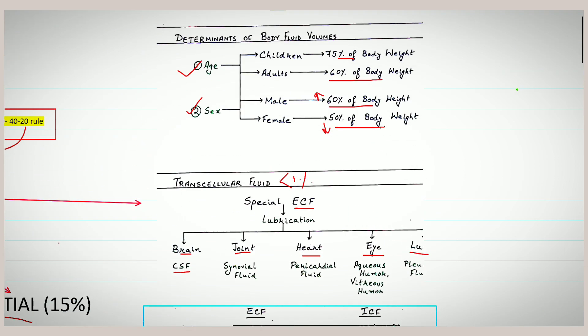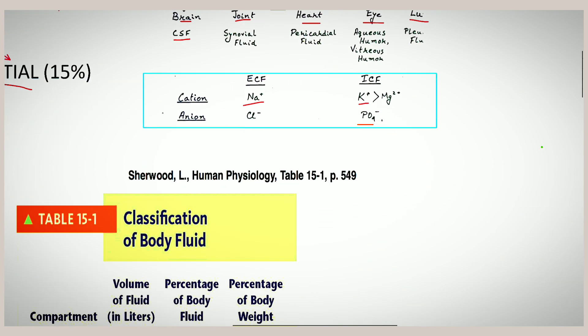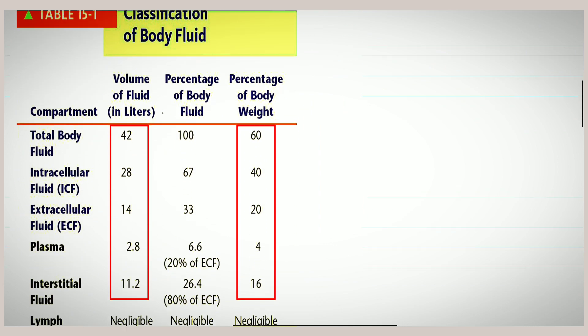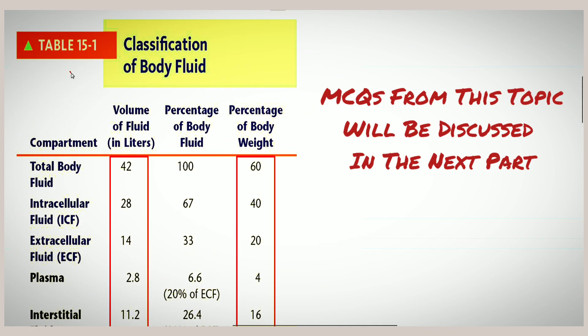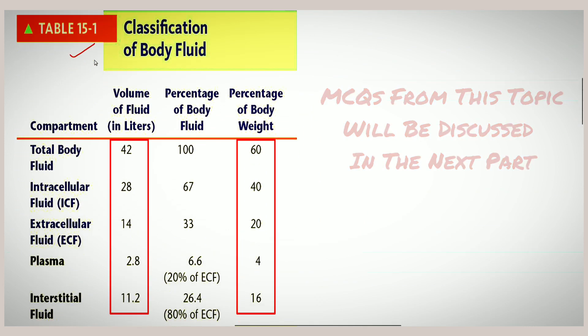A question that may be asked: at what age is water content equal in both males and females? The answer is at the pre-puberty stage, when body water content is equal in both sexes.